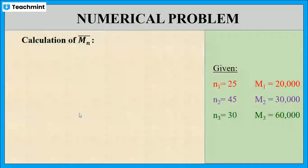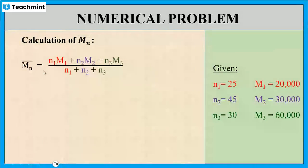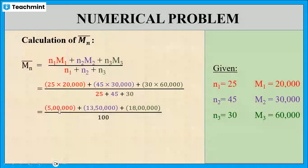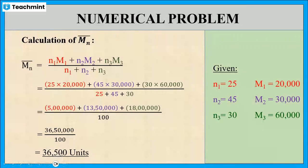First, let us calculate Mn bar. The formula is: Mn bar equals N1·M1 plus N2·M2 plus N3·M3, whole divided by N1 plus N2 plus N3. Substituting all values: Mn bar equals (25×20,000) plus (45×30,000) plus (30×60,000), whole divided by (25 plus 45 plus 30). Simplifying term-wise: 5,00,000 plus 13,50,000 plus 18,00,000. On further simplification, the answer is 36,500 units.